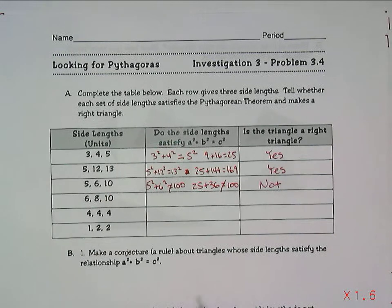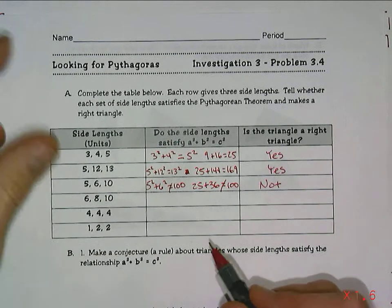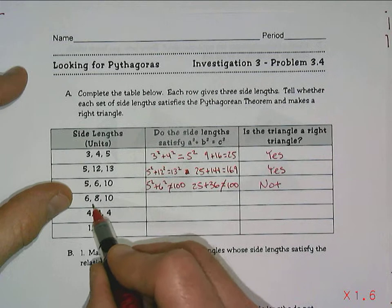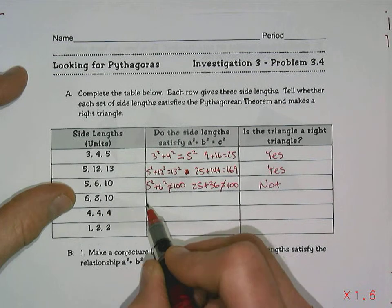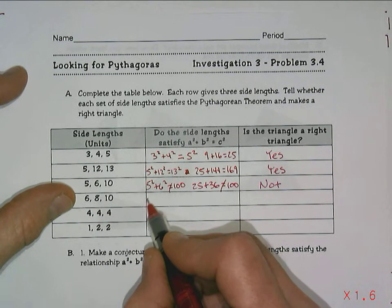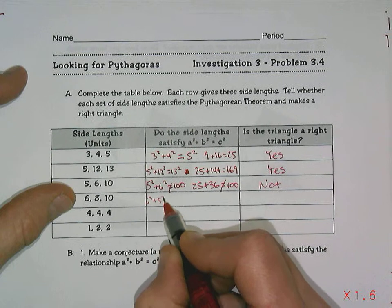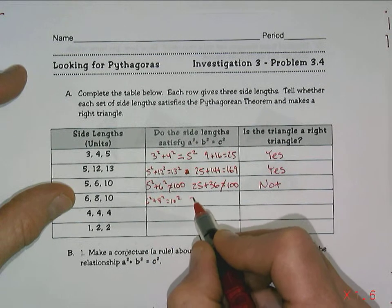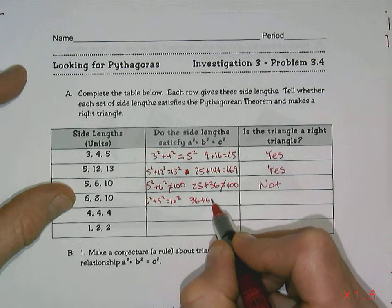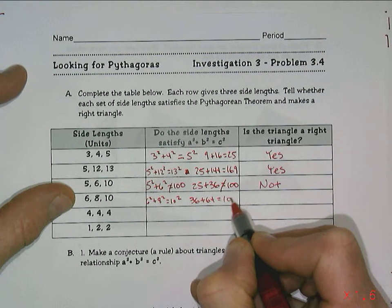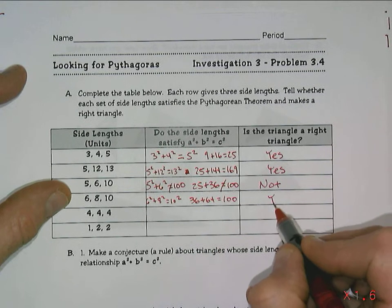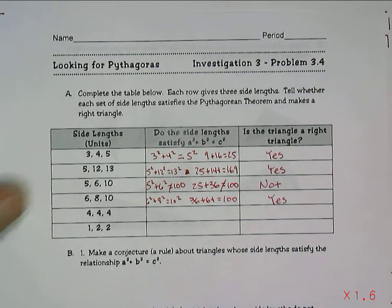You can see that you can't just take any pair of numbers and make them work. This would not, if I were to try to build it, it would not be a right triangle. If we try another one, 6, 8, and 10: 6 squared plus 8 squared, does that equal 10 squared? That would be 36 plus 64, and that does equal 100, so yes, it's a right triangle.